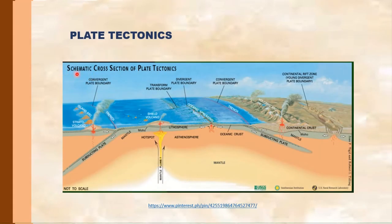We have here the schematic cross-section of plate tectonics. As you have learned, plate tectonics is the movement of the Earth's crust. There are three types of plate boundaries: Convergent boundaries, divergent boundaries, and transform plate boundaries.